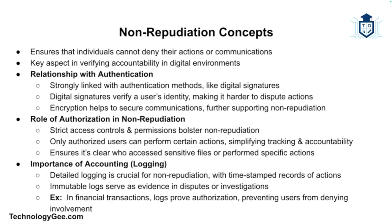Non-repudiation ensures that a person cannot deny their actions or communications after the fact. It is closely tied to authentication — by verifying someone's identity with secure methods such as digital signatures, it becomes harder for that person to claim they didn't perform the action. Digital signatures and encryption are key tools used to guarantee non-repudiation. Authorization policies also support non-repudiation: if only authorized users can access a file, it is easier to prove who did what and when. Logs provide time-stamped and immutable records that serve as evidence in case of disputes.